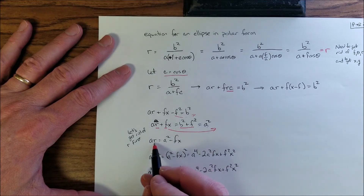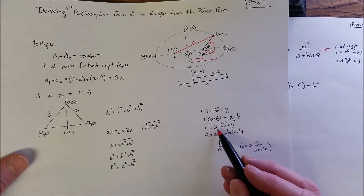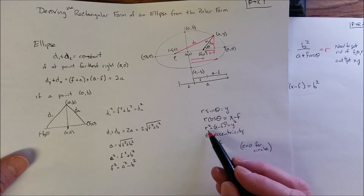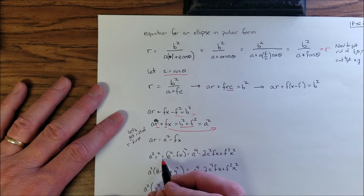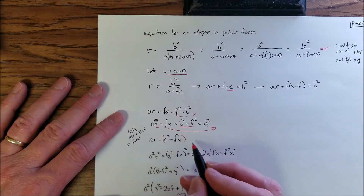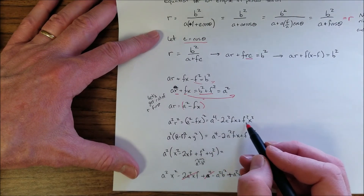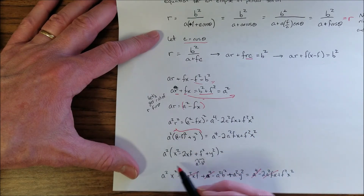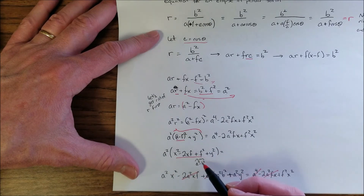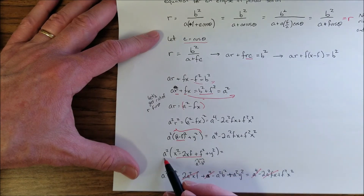Isolating r: a·r equals a squared minus f·x, so squaring both sides gives a squared r squared equals (a squared minus fx) squared, which expands to a to the fourth minus 2a squared fx plus f squared x squared. Now substituting r squared equals (x minus f) squared plus y squared on the left side and multiplying out, we also use f squared equals a squared minus b squared.